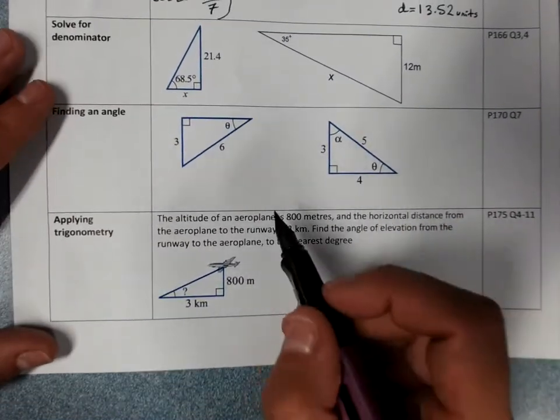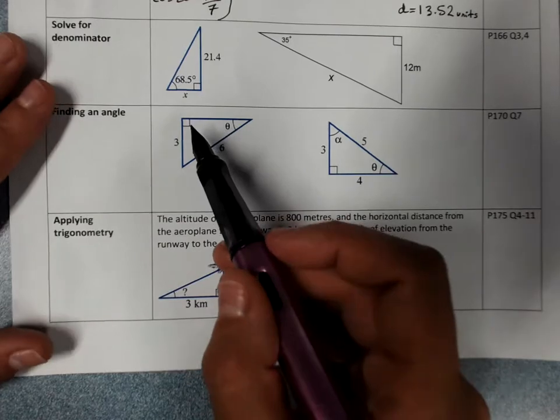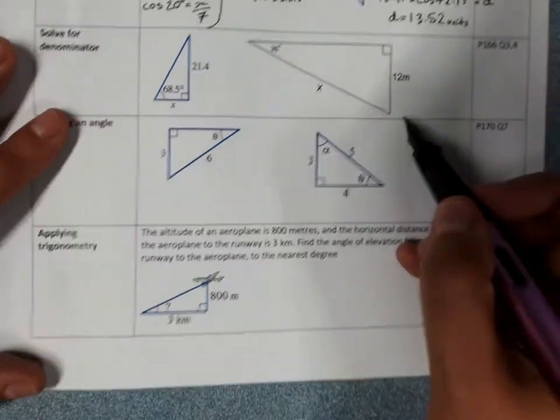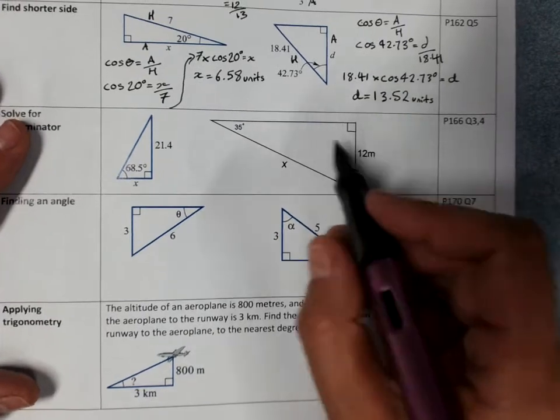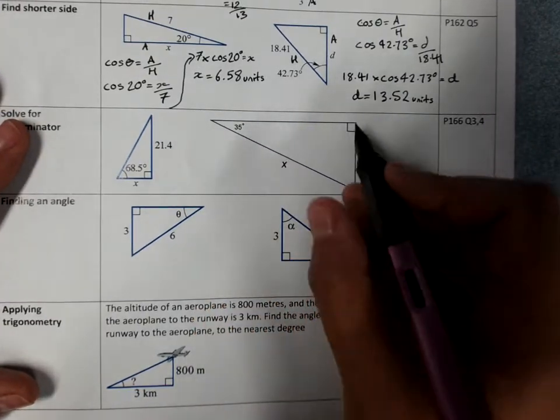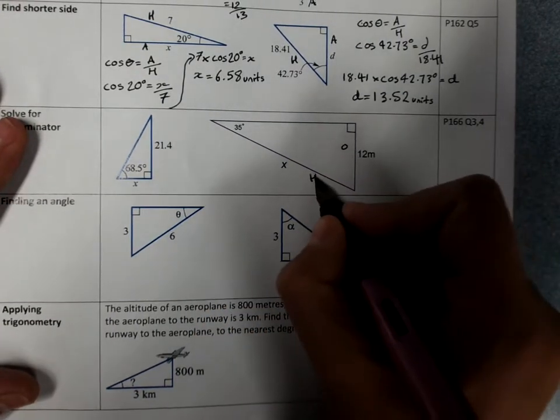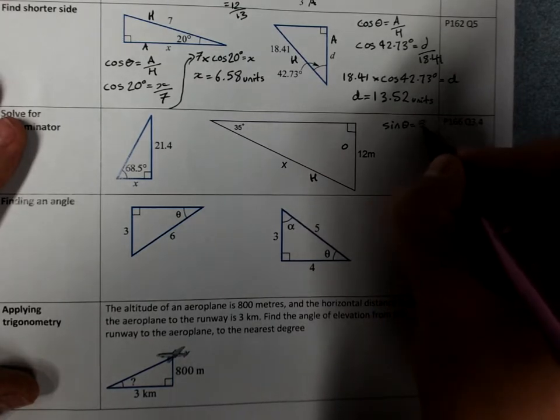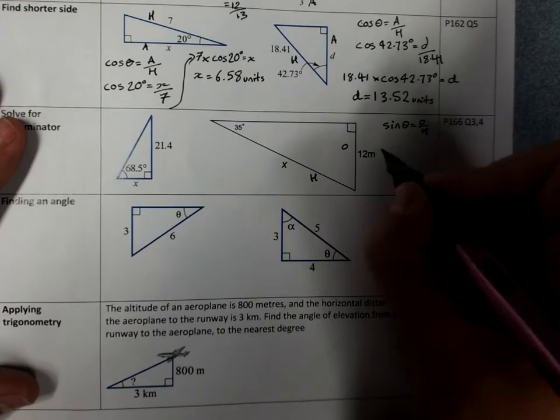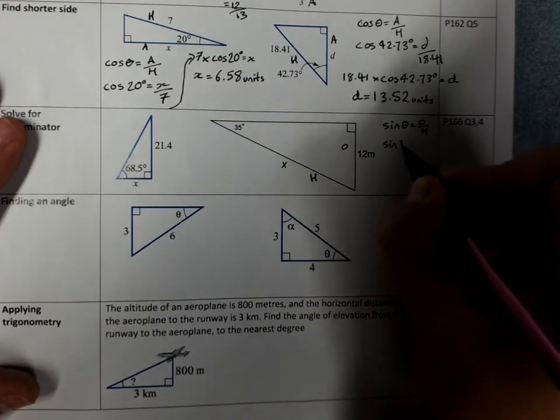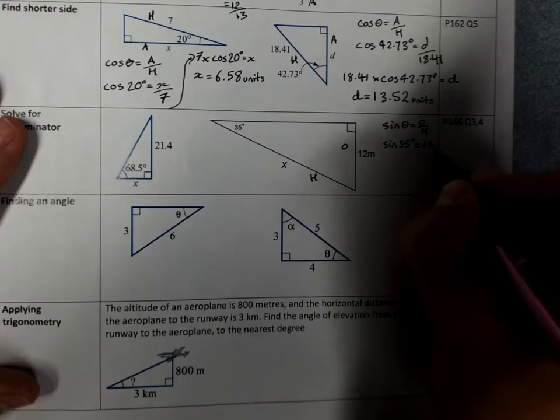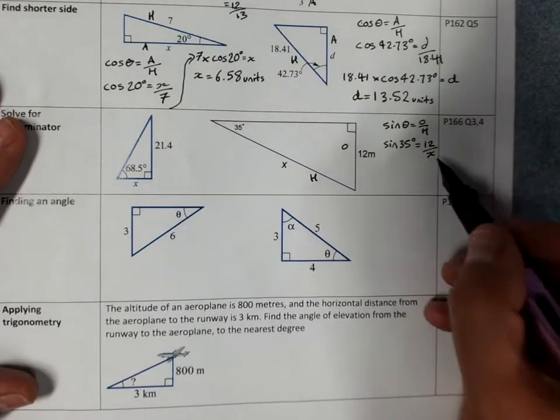Sometimes when we're solving, the unknown is the denominator. We'll have a look at what that means. I might do this one first over here. Label our sides. Opposite and hypotenuse. That means sine. Sine of the angle is opposite over hypotenuse. Substitute your values including the angle with the degrees sign. And now you can see where this is different. The x is underneath.